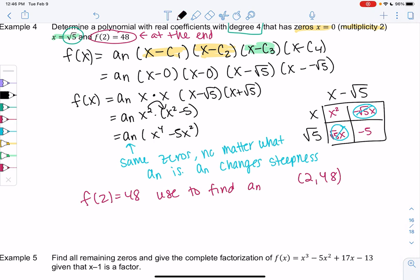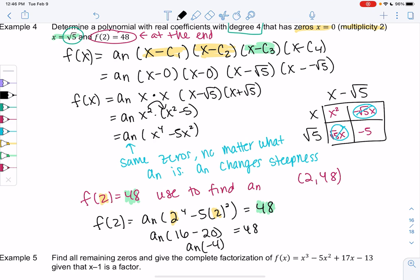So we're going to plug in 2 for x. So f of 2 means we get a_n, which is unknown, times 2 to the 4th minus 5 times 2 squared. And then that should equal 48 because that's my y value. So we're plugging in 2 for x, we're plugging in 48 for the output or y. So let's see. We get 2 to the 4th is 16 minus 5 times 4, which is 20, equals 48. So a_n times negative 4 is 48.